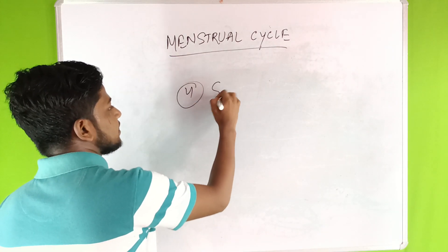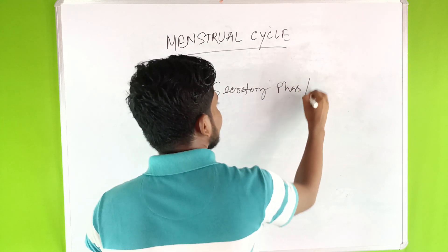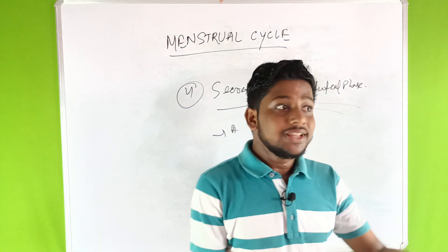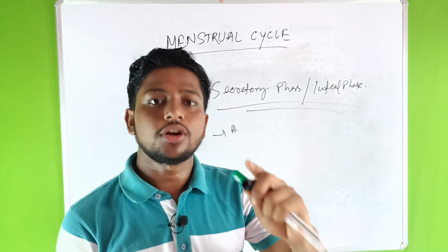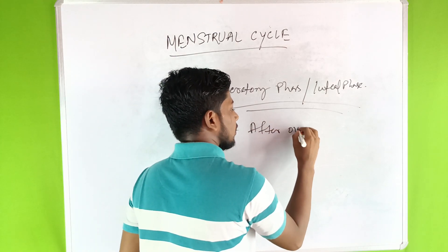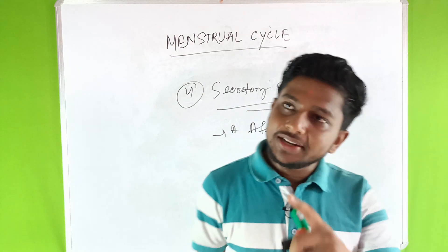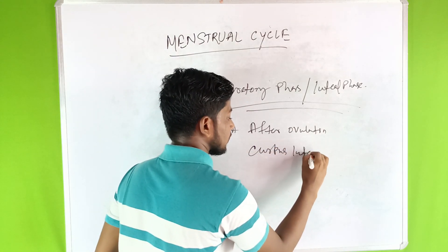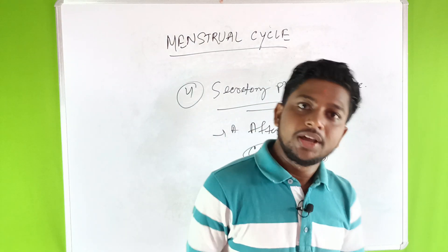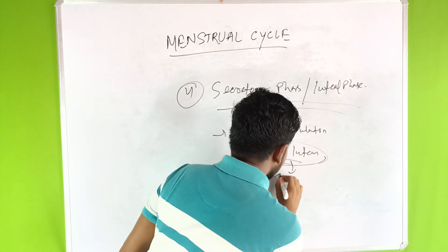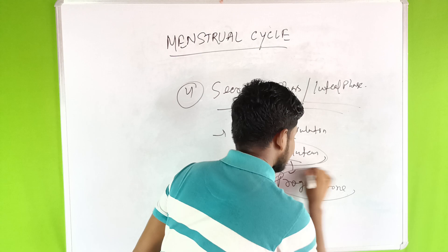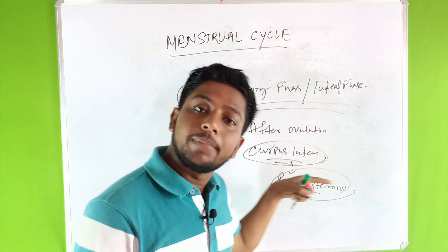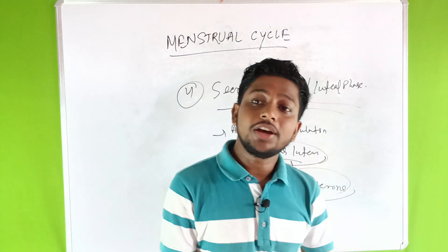The fourth phase is called the secretory phase or luteal phase. After ovulation, the remaining ovarian follicle turns into a structure called the corpus luteum. The corpus luteum secretes a hormone called progesterone.